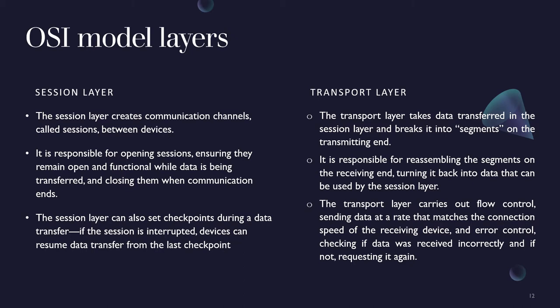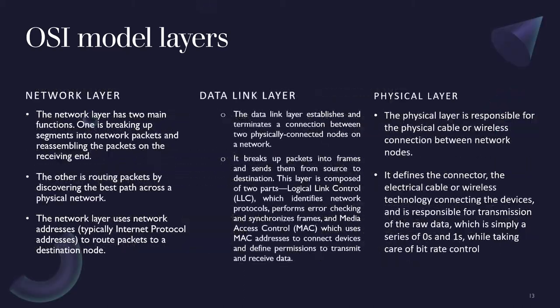The Transport layer takes data transferred in the session layer and breaks it into segments on the transmitting end. The Network layer has two main functions: breaking up segments into network packets and reassembling them on the receiving end, and routing packets by discovering the best path across a physical network. The Data Link layer establishes and terminates a connection between two physically connected nodes. The Physical layer is responsible for the physical cable or wireless connection between network nodes.